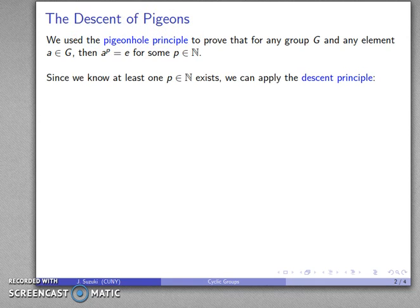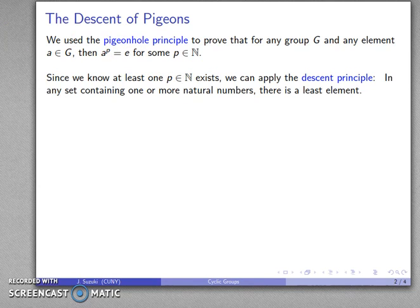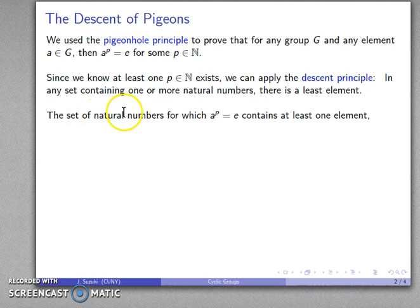Since we know at least one p exists, we can apply the descent principle. The descent principle says that any time you have a set containing one or more natural numbers, there has to be a least element.